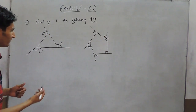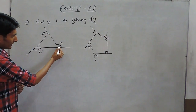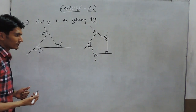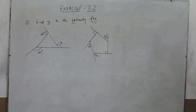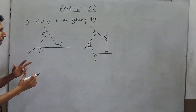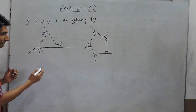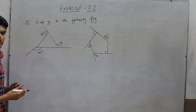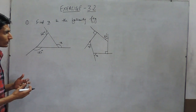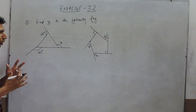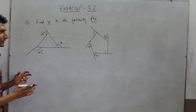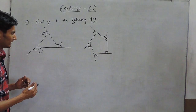You have to find the value of x in each case. We know that the exterior angles of any polygon, when added together, will give 360 degrees — the sum of all exterior angles of any polygon is equal to 360 degrees.